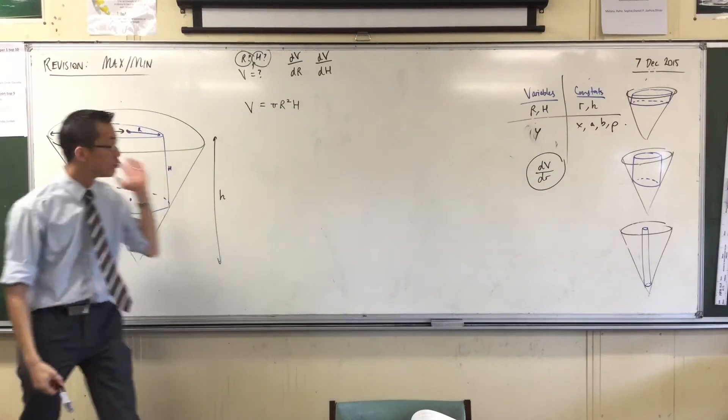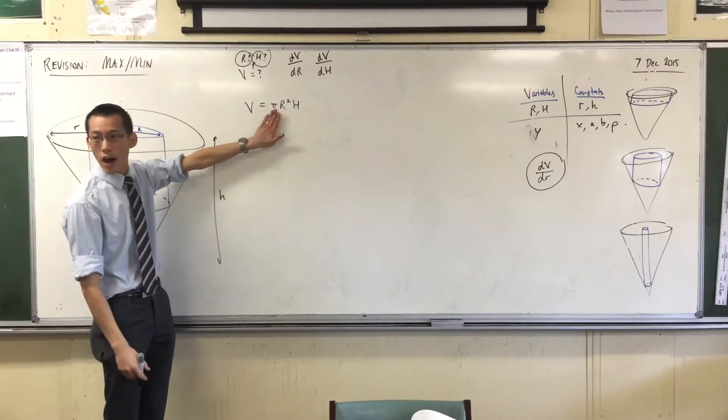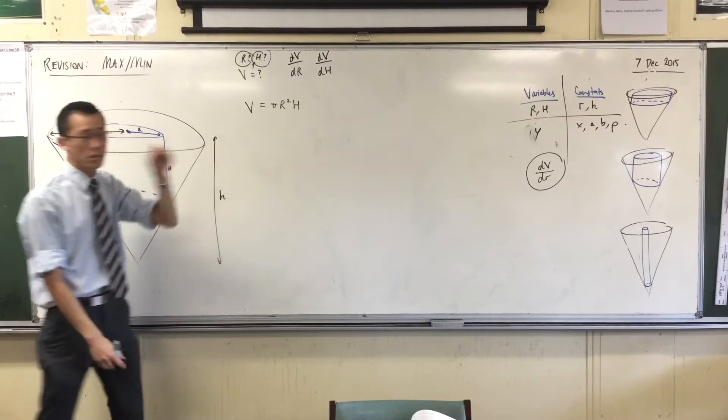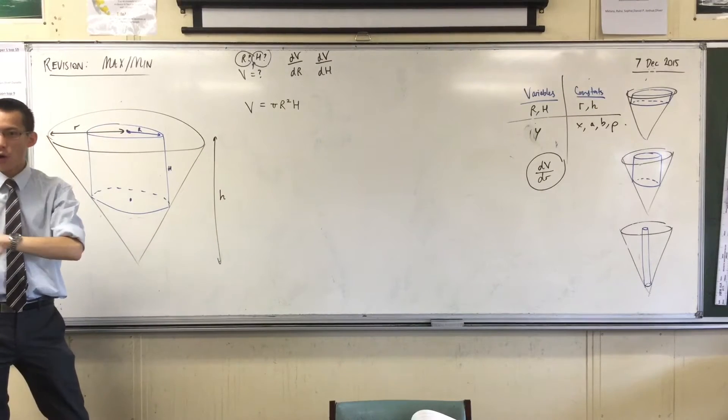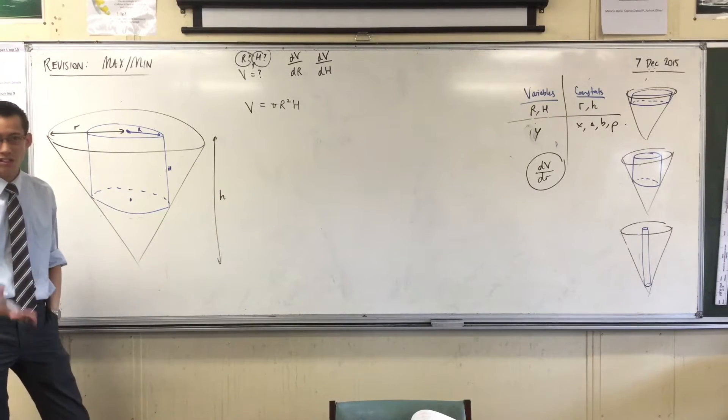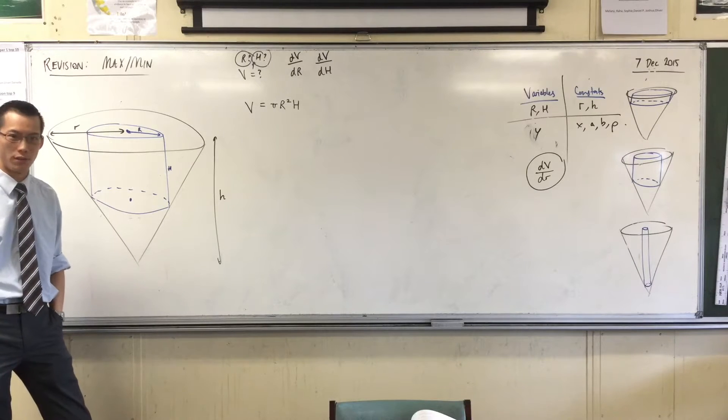I've got volume, but I've got it as a function of R and H. So now I need to get rid of an R or get rid of an H. The question is, which one should I get rid of?